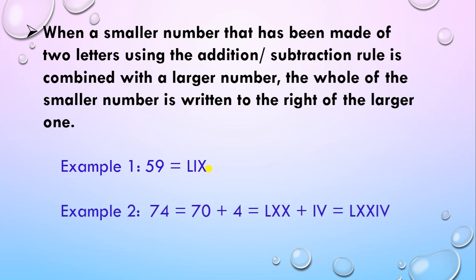Let's see one more example: 74. For 70 we write LXX, and for 4 we write IV. So IV is written at the end, after LXX — making 74 written as LXXIV.